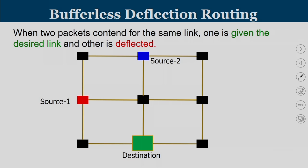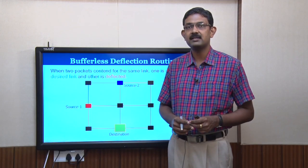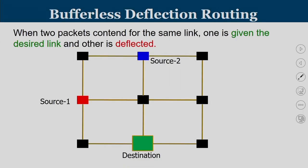How does the deflection routing logic work? When two packets are contending for the same link, one is given the desired link and the other packet is deflected. Consider a diagram where there are two sources — one shown by a red color node and one by a blue color node — both have the same destination marked in green. When you apply XY routing, the conventional routing algorithm, the packet from red and the packet from blue both travel toward the same junction point, and they both compete for the same output, which is south.